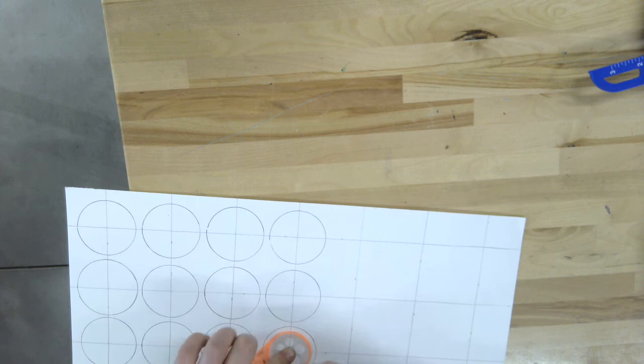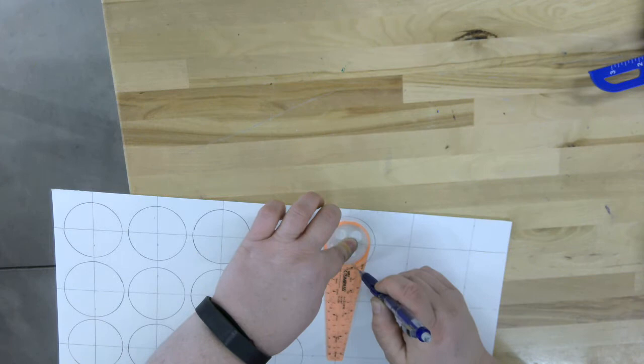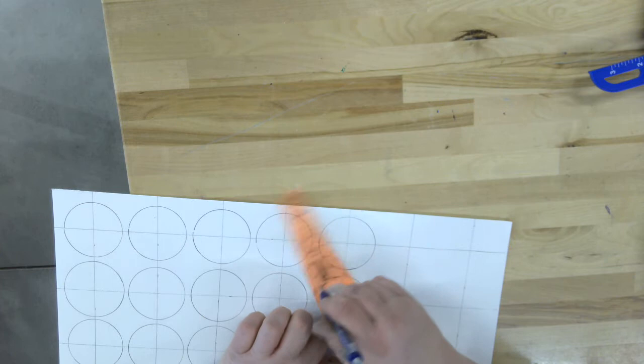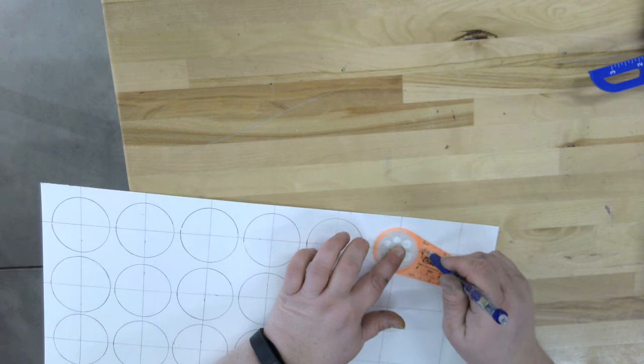So I got three more rows left. So I'm putting that where the lines intersect, hold it down, third dot, swoop it around. Put it in there where the lines intersect, hold it down, swoop it around.